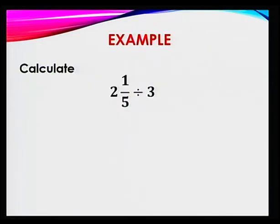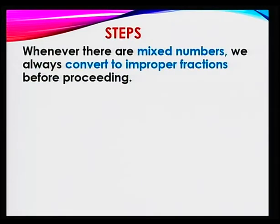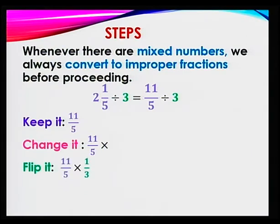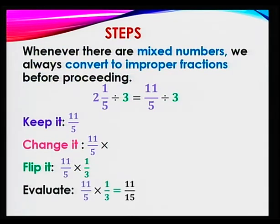Let's take another one: 2 and 1 fifth divided by 3. You have a mixed number, so always convert to improper fractions first. That's 11 over 5 divided by 3. Remember division: keep it, change it, flip it. Keep 11 over 5, change division to multiplication, and flip 3 which becomes 1 third. So that will be 11 over 5 times 1 over 3. Multiply the numerators: 11 times 1 is 11. Multiply the denominators: 5 times 3 is 15. The answer is 11 over 15.